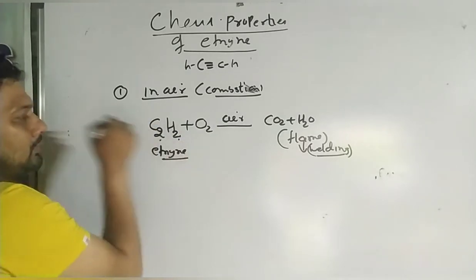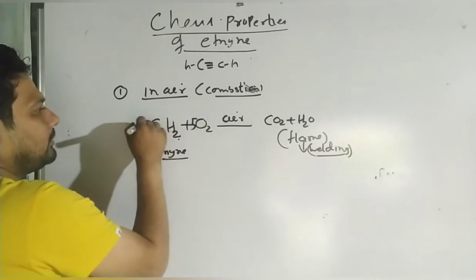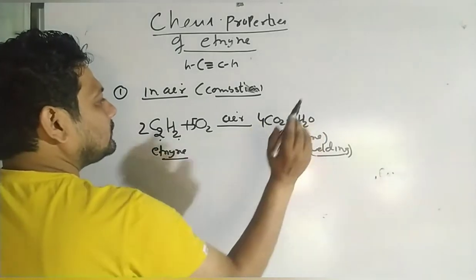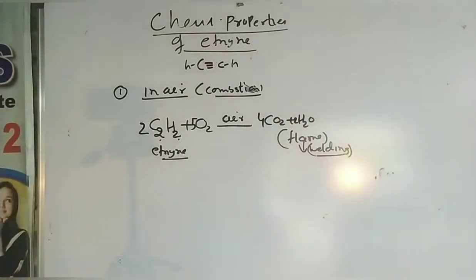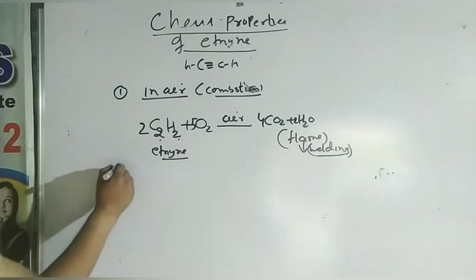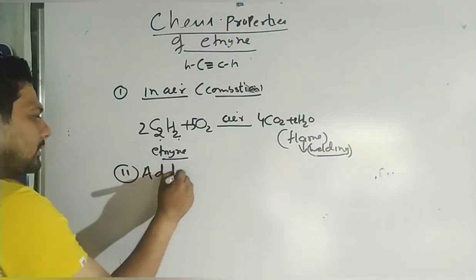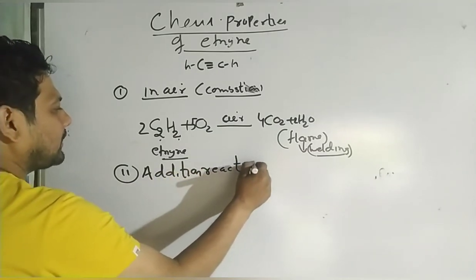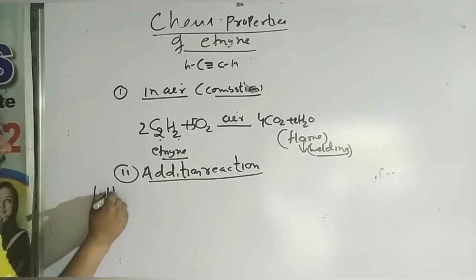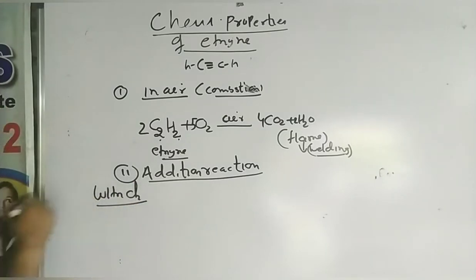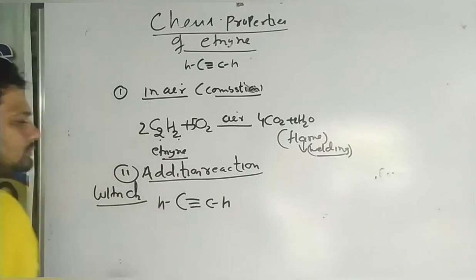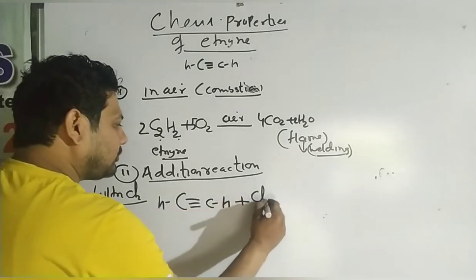Balance the combustion equation — this is a very important reaction. Next is addition reaction. Ethyne undergoes addition reactions with chlorine, hydrogen, and bromine, as well as HBr. It has a triple bond.